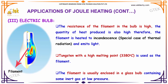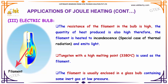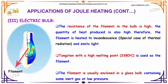Tungsten, with a high melting point of almost 3380 degrees Celsius, is used as the filament. The filament is enclosed in a glass bulb containing some inert gas at very low pressure.